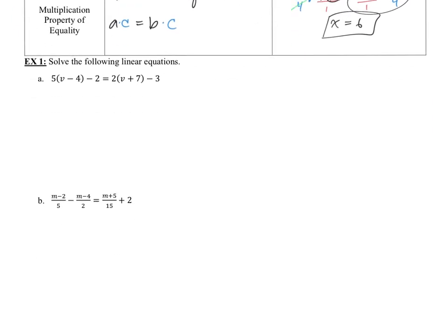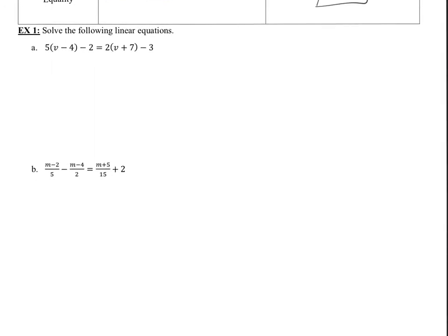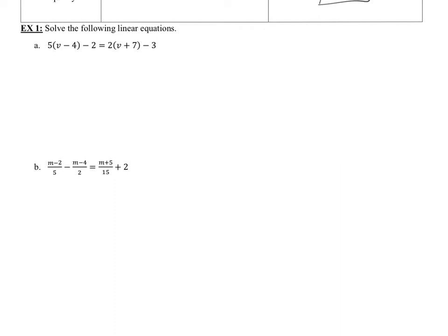Let's apply these properties. We know this is an equation because there's an equal sign, giving us a left-hand side and a right-hand side — which means we can use all these properties. I want to solve for v. The first thing to do is get rid of all the parentheses. Let's use the distribution property on both sides. That gives us 5v minus 20 minus 2 equals 2v plus 14 minus 3. I'll use that concept of keeping a middle line down the equal sign — you do not need to use the green line.